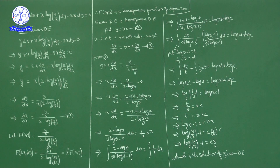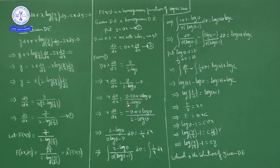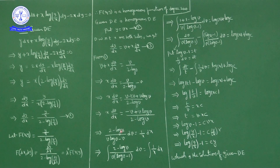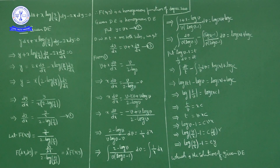Cross-multiplying and separating variables — all v terms with dv on one side, all x terms with dx on the other — we get (2 minus log v) upon (v log v minus v) dv equals (1/x) dx. Variable separation is now complete.